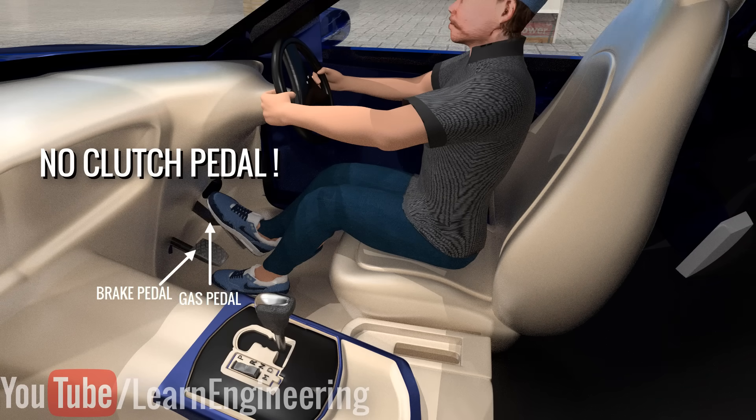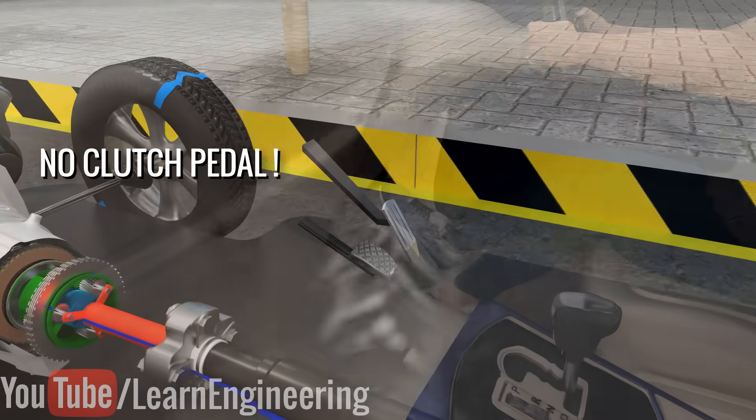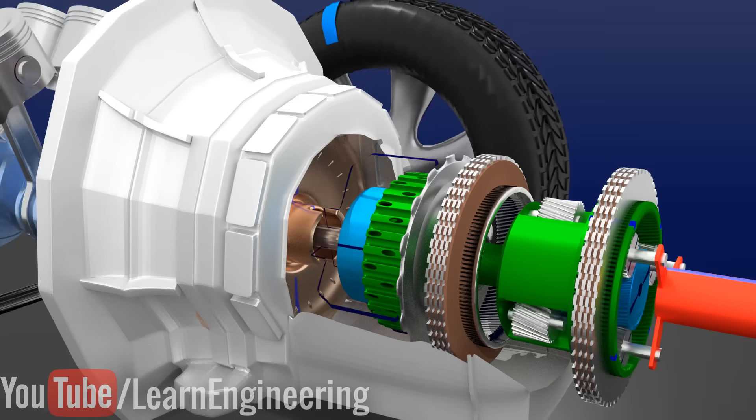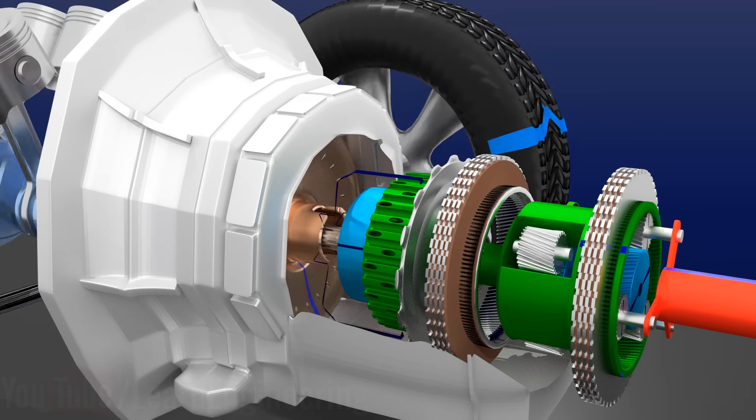In an automatic transmission car, the work of the clutch pedal is automatically done by a hidden component, which is truly an engineering marvel, the torque converter.